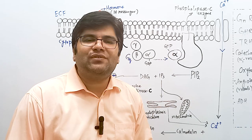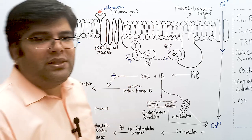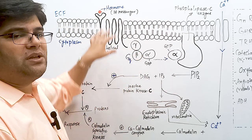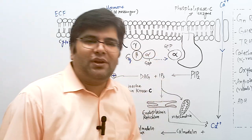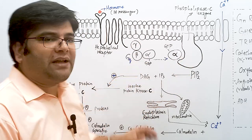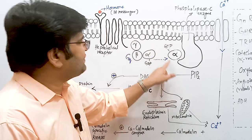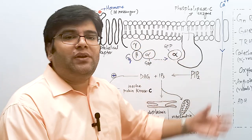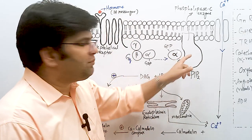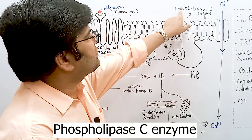The alpha subunit, when attached with GDP, is inactive. When the hormone binds with the receptor, this G protein associates with the inner surface of the receptor and becomes activated. When activated, the alpha subunit detaches from the beta and gamma dimer, and the alpha subunit — now attached with GTP — activates an effector protein. In the cyclic AMP system, this effector protein was adenylyl cyclase. Here, it is phospholipase C.